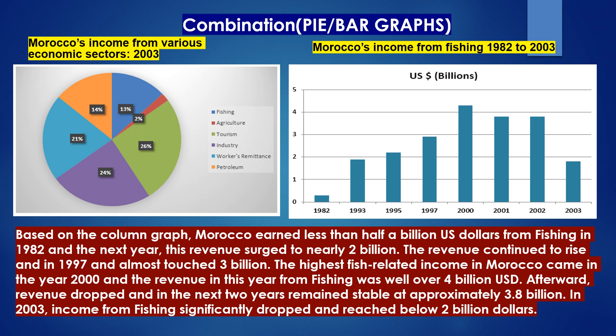Based on the column graph, Morocco earned less than half a billion US dollars from fishing in 1982, and the next year this revenue surged to nearly 2 billion. The revenue continued to rise and in 1997 almost touched 3 billion. The highest fish-related income in Morocco came in the year 2000, and the revenue from fishing that year was well over 4 billion USD.